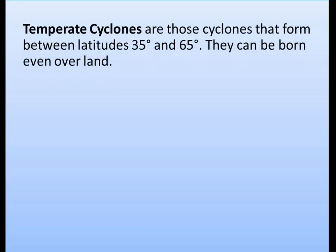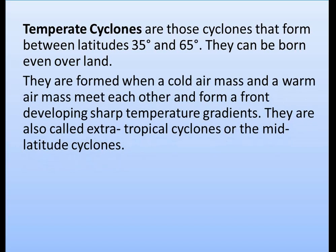Temperate cyclones are those cyclones that form between latitudes 35 degrees and 65 degrees in both the northern and southern hemispheres. Unlike tropical cyclones, they can form even over land. They are formed when a cold air mass and a warm air mass meet each other and form a front, developing sharp temperature gradients. They are also called extratropical cyclones or mid-latitude cyclones.